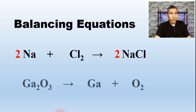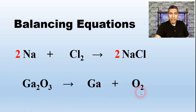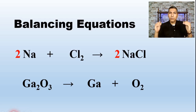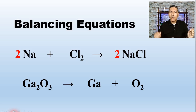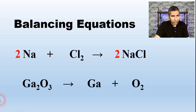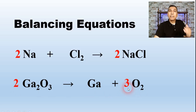Now let's try another example — a decomposition reaction. We have gallium oxide decomposing into gallium metal and oxygen gas. Looking at the oxygen atoms, I have 3 on the left side and 2 on the right side. To make them equal, I multiply the 3 by 2 and the 2 by 3, giving 6 oxygen atoms on both sides. In math, that's called the least common multiple — I bump those numbers up so they're equal.